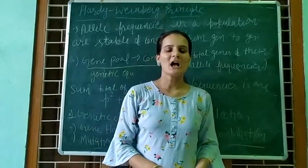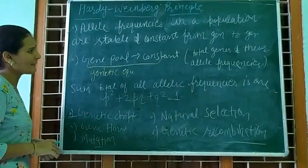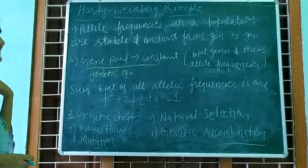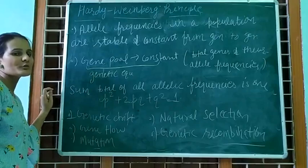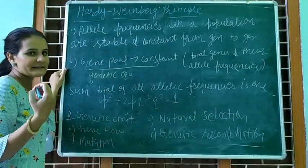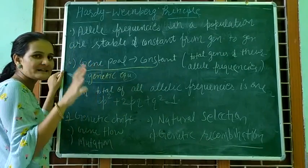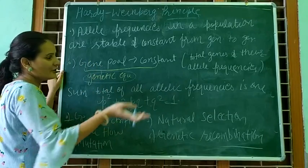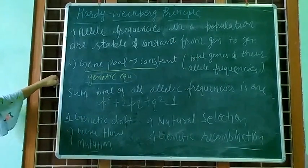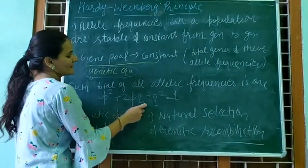Now we have to talk about the Hardy-Weinberg Principle. This principle states that allele frequency in a population is stable and constant from generation to generation. The frequency of alleles in a population is stable and constant. The gene pool is also constant — this is called genetic equilibrium.